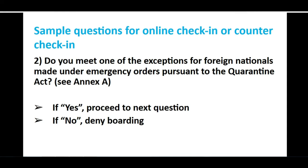The next question is: do you meet one of the exceptions for foreign nationals made under emergency orders? If you are under the exemptions, you select yes. For example, the Government of Canada has allowed COPR holders — confirmation of permanent resident holders whose application was approved before March 18th — and study permit holders whose applications were approved before March 18th. So if you are allowed under certain exceptions, you select yes; otherwise, if you say no, you will not be allowed to board the flight.